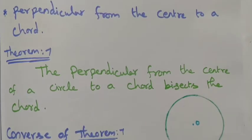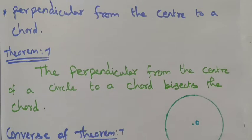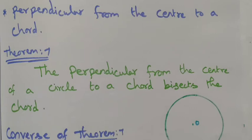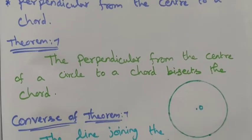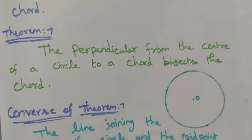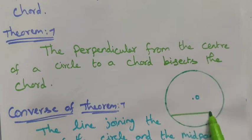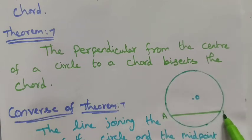Let's see them one by one. First: perpendicular from the center to the chord. We are going to see one line where the endpoints touch the circle — that is a chord. A line dropped from the center of the circle to a chord bisects the chord, meaning it equally divides the chord.